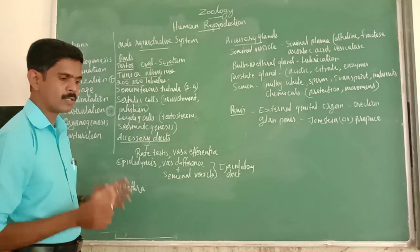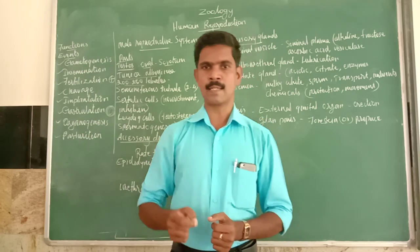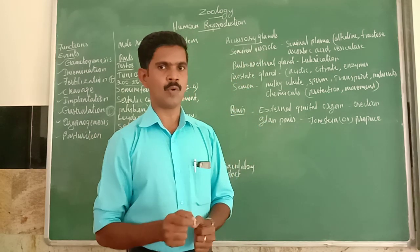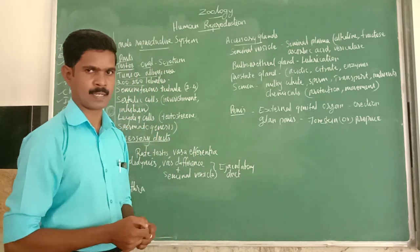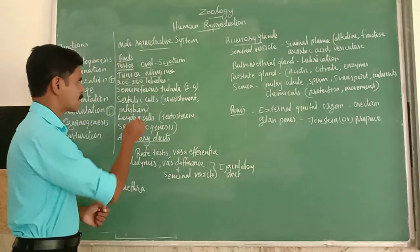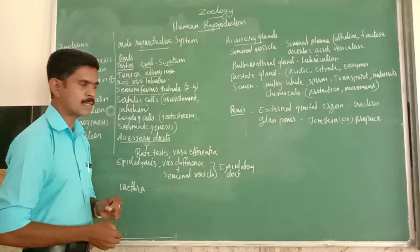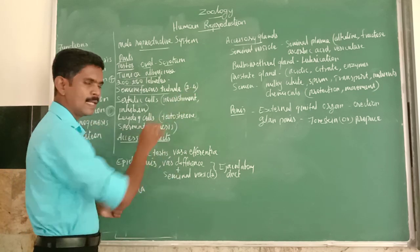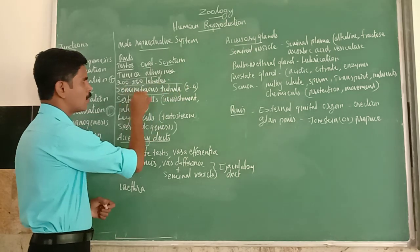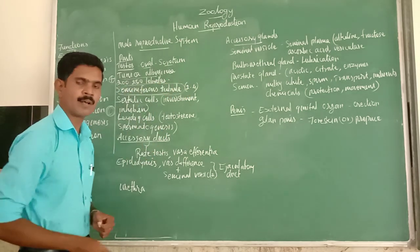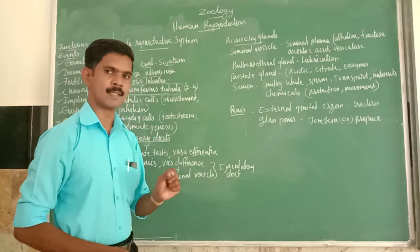Each lobule consists of 2 to 4 highly coiled tubule-like structures called seminiferous tubules. The seminiferous tubule is the site for the production of sperm — the sperm is produced inside the seminiferous tubules of the testes.